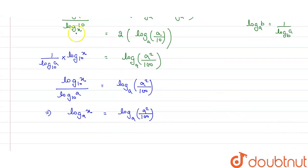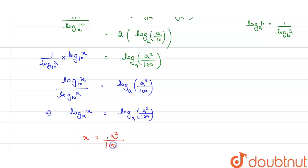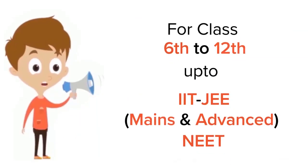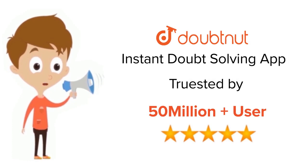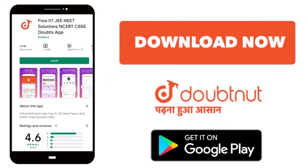Since we have a common base, we equate: x equals a² upon 100. So the value of x is a² upon 100. Thank you. For class 6 to 12, IIT JEE and NEET level, trusted by more than 5 crore students — download the DoubtNet app today.